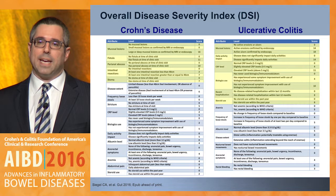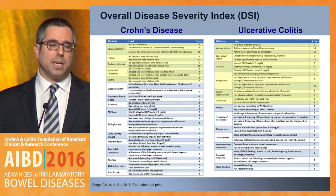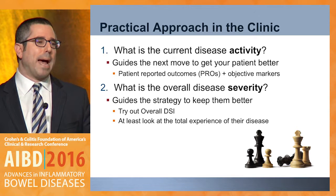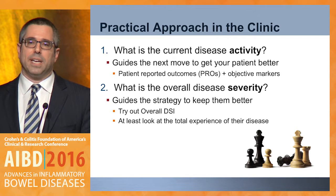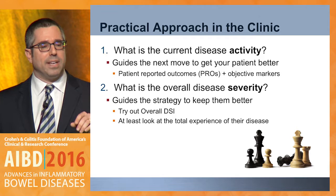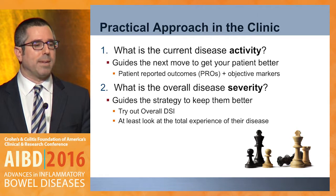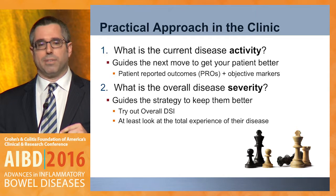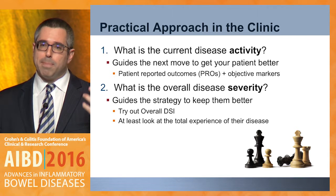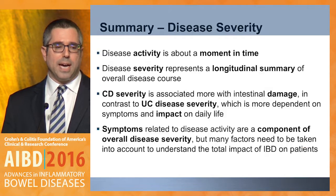It can't just be about symptoms that they have that day — it really has to be about their whole experience. We need some way to formalize that to drive these decisions as opposed to arbitrarily thinking this patient kind of has bad disease or doesn't. Thinking about this practically in the clinic — taking care of these patients isn't straightforward, we're always thinking about what happened in the past and what we should be doing for the future. Disease activity guides the next move to get your patient better, relying on patient-reported outcomes and objective markers like endoscopy, imaging, and laboratory testing. However, it's the overall disease severity that really guides the strategy for how to keep them better. You can try out the overall DSI and see how it works in your practice, but at least keep in mind that disease severity really is a different term than disease activity — think about the overall experience of their disease, not just a moment in time, as you're thinking about treatment strategies and approaches.